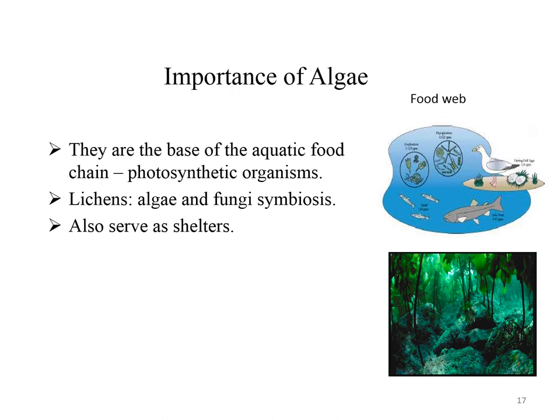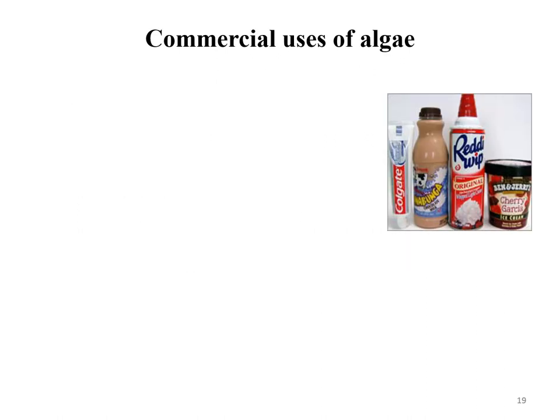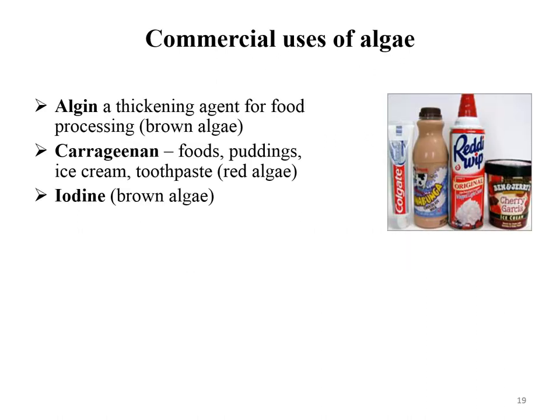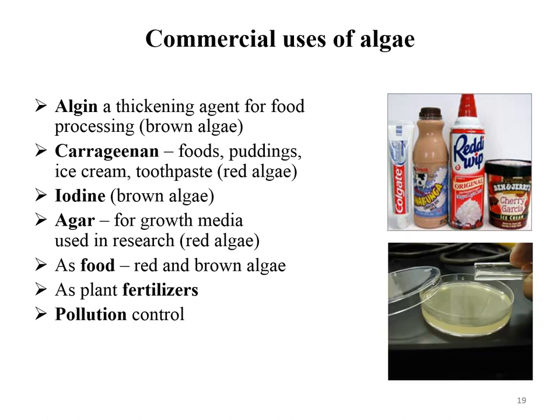The importance of algae: they are the base of aquatic food chains for photosynthetic organisms. Lichen — the association between algae and fungi — also serves as shelter. Red algae form coral reefs. Some algae are used for extracting antibiotics and in sewage disposal. Chlorella is used in prolonged space flights for generation of oxygen, food production, and utilization of carbon dioxide. They are used in industries to produce algin, carrageenan, iodine, and agar. Algae extracts are used in preparing food, as crop fertilizer, and in wastewater treatment.